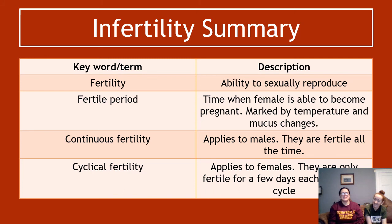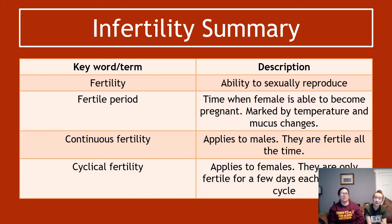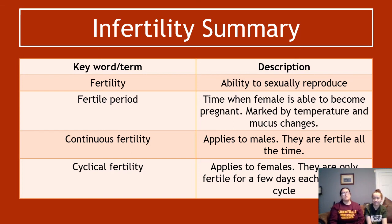Continuous fertility applies to males — they are fertile all the time. Cyclic fertility applies to females — they are only actually fertile for a few days of each cycle. That's it for fertility and infertility. The next part looks at: if we have a couple with low fertility, how do we help them?